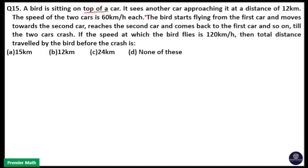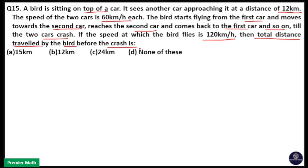When a bird is sitting on top of a car, it sees another car approaching at a distance of 12 km. The speed of the two cars is 60 km per hour each. The bird starts flying from the first car towards the second car, reaches it and comes back to the first car, and so on till the two cars crash. The speed at which the bird flies is 120 km per hour. What is the total distance travelled by the bird before the crash?